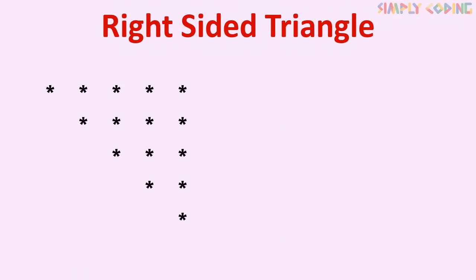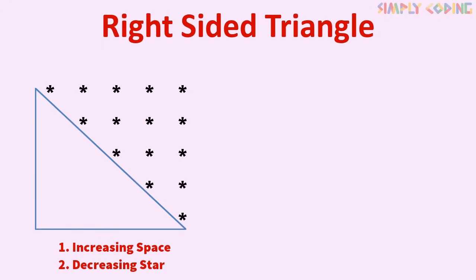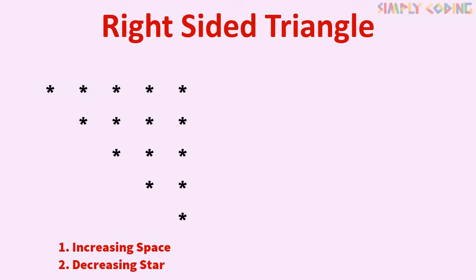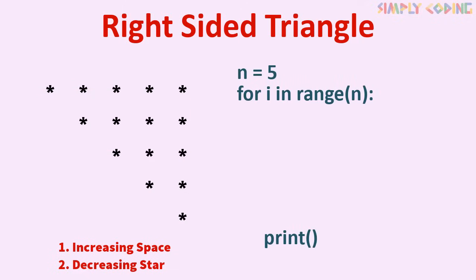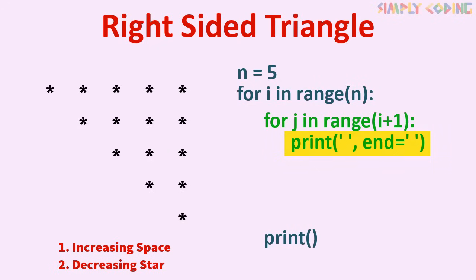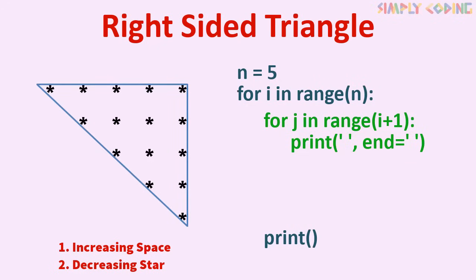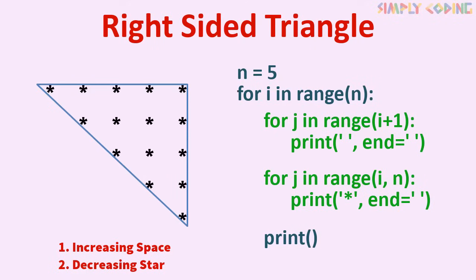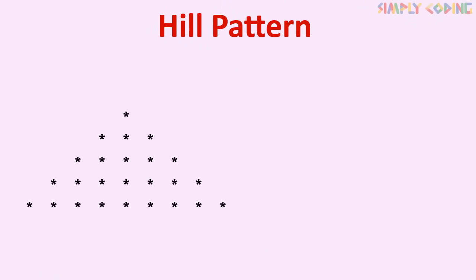Now what if the pattern is the reverse — an increasing triangle of space followed by a decreasing triangle of star? Since the number of rows is the same, we copy the same outer loop. The first nested loop is an increasing triangle running till i plus 1, where the print statement prints space only. Then we add another nested for loop for the decreasing triangle running from i to n, which prints star. This is the final code for this pattern.